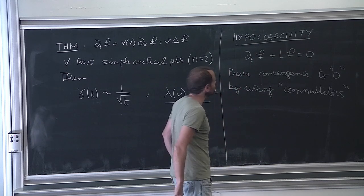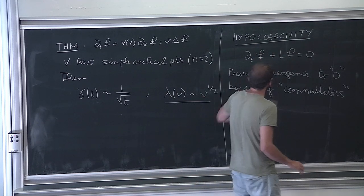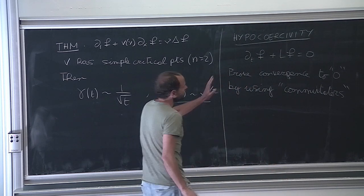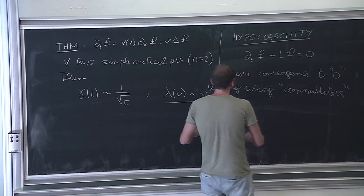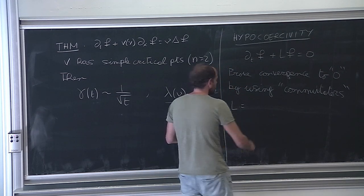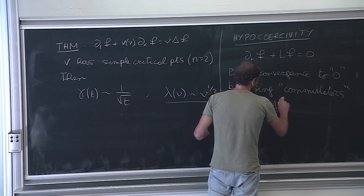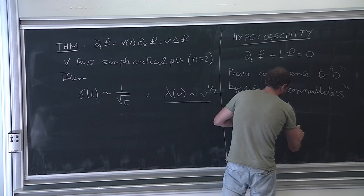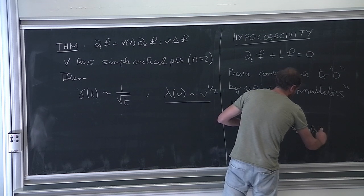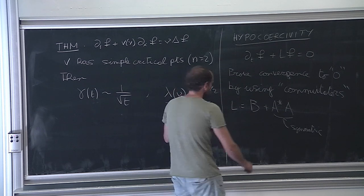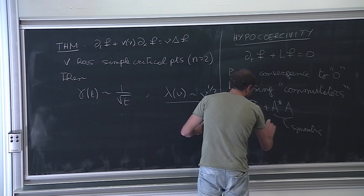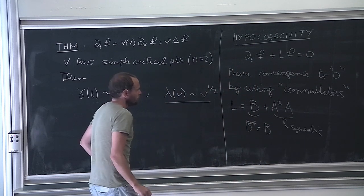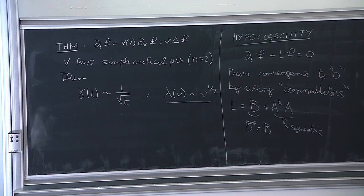The word was actually suggested by Thierry to Villani. So we have here the inventor of the word. The operator L typically has the form B + A*A, where A*A is symmetric and B is anti-symmetric, so B* = -B. I don't want to go into super-general theory; there is the memoir of Villani that does it in great generality.